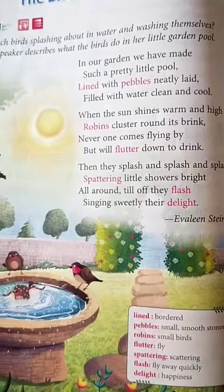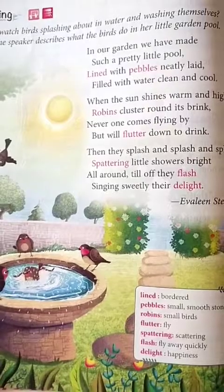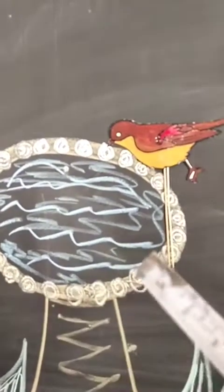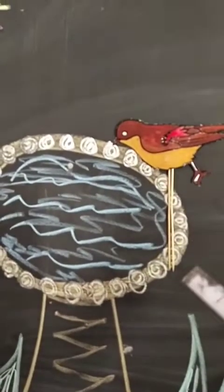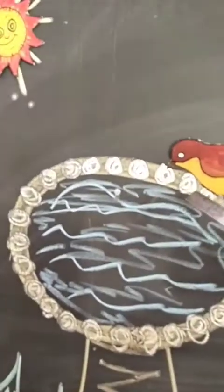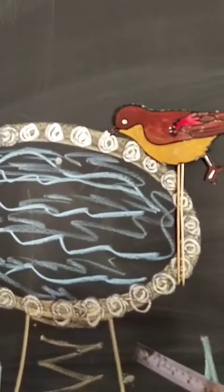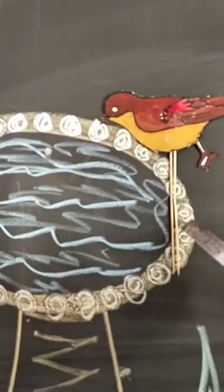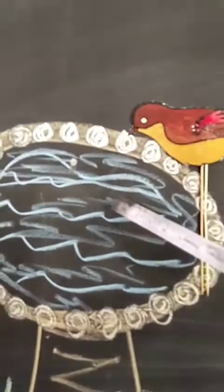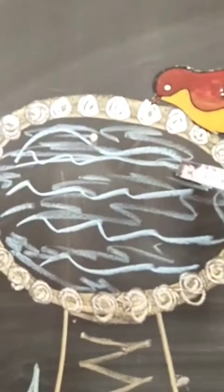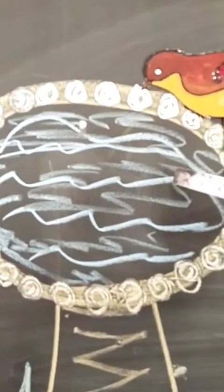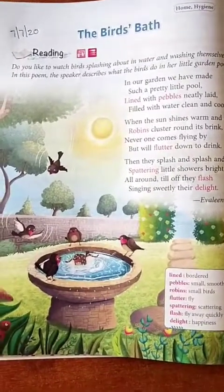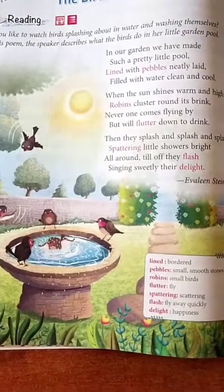In the first paragraph the poetess says there is a pretty little pool in her garden. You can see here there is a pretty little pool that is neatly bordered with small smooth stones, and it is filled with clean and cool water where birds come to drink and bathe.